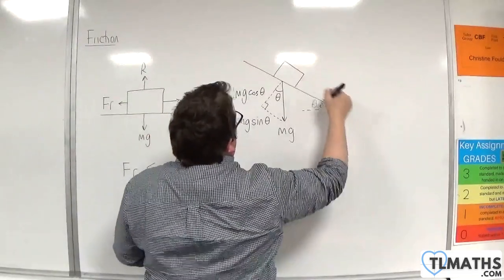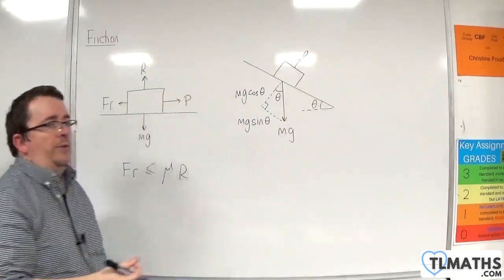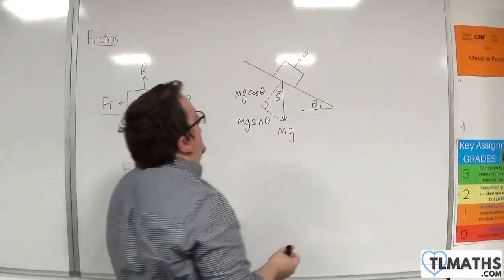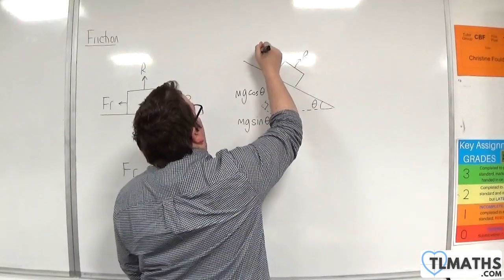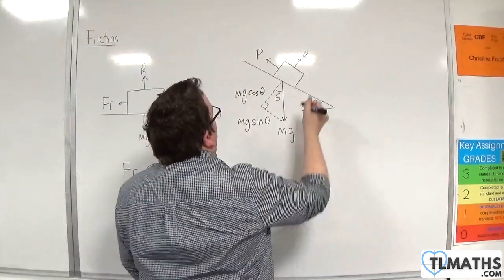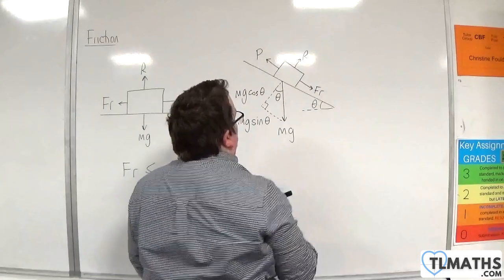Now, the block is in contact with a surface, so there will be a normal reaction force that works perpendicular to the surface. And then you might have something like the block is being pulled up the slope by a force P. And then friction will work against the direction of motion.